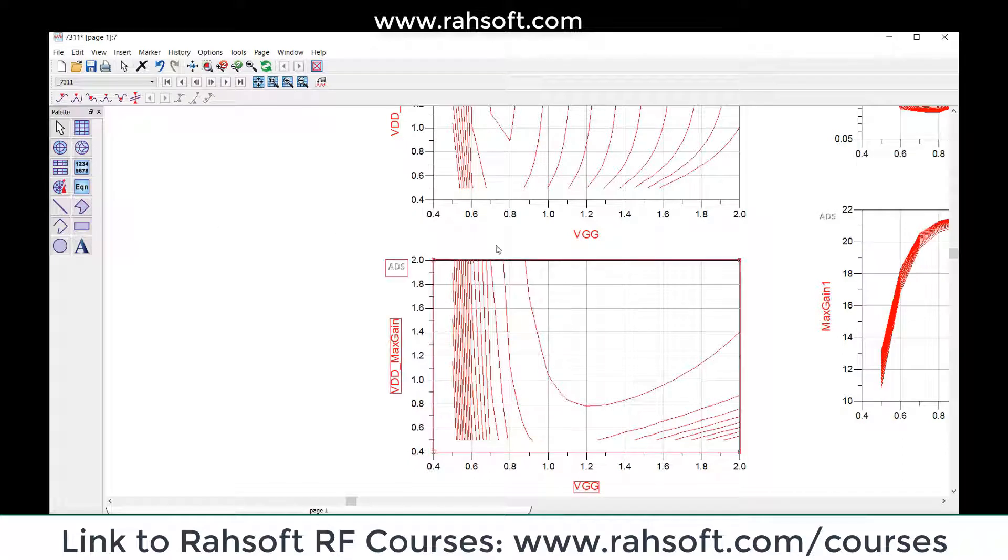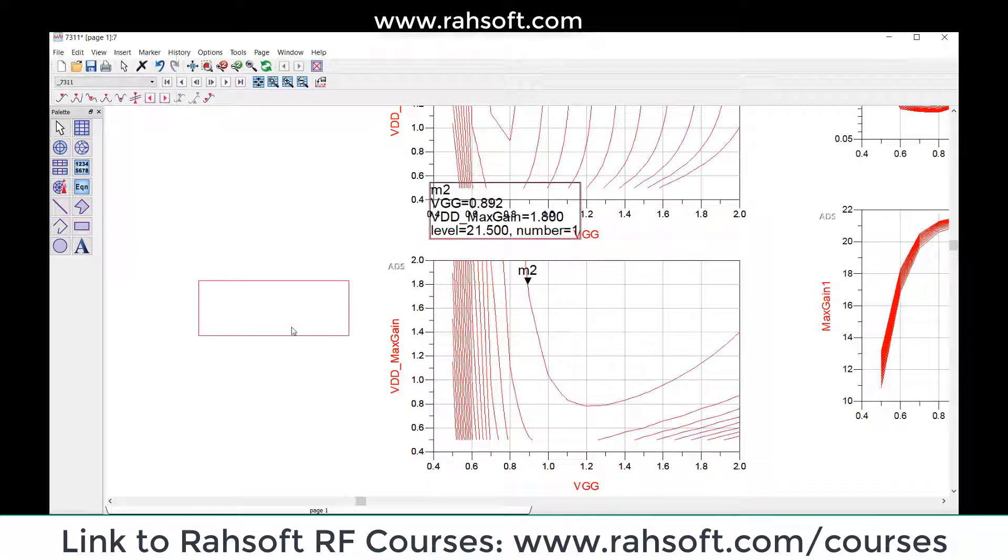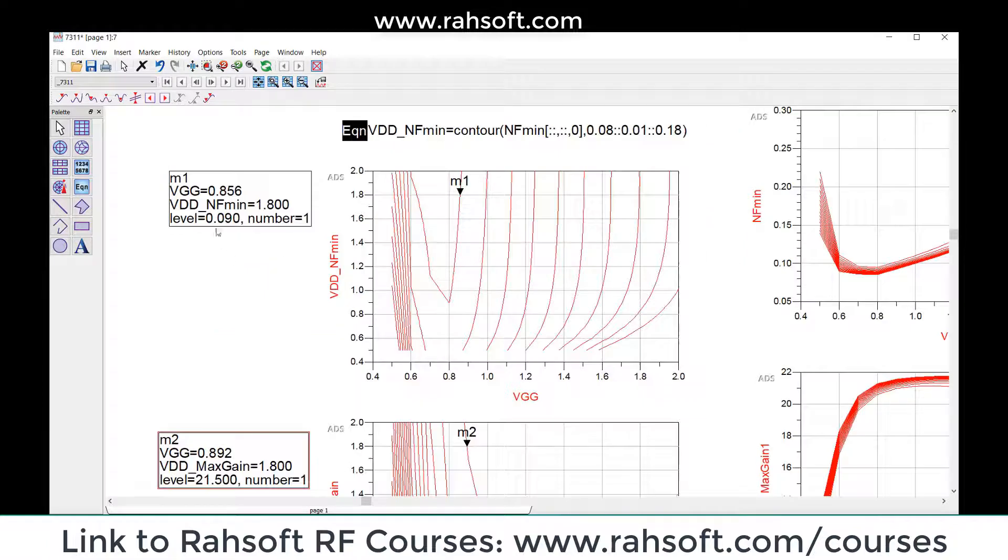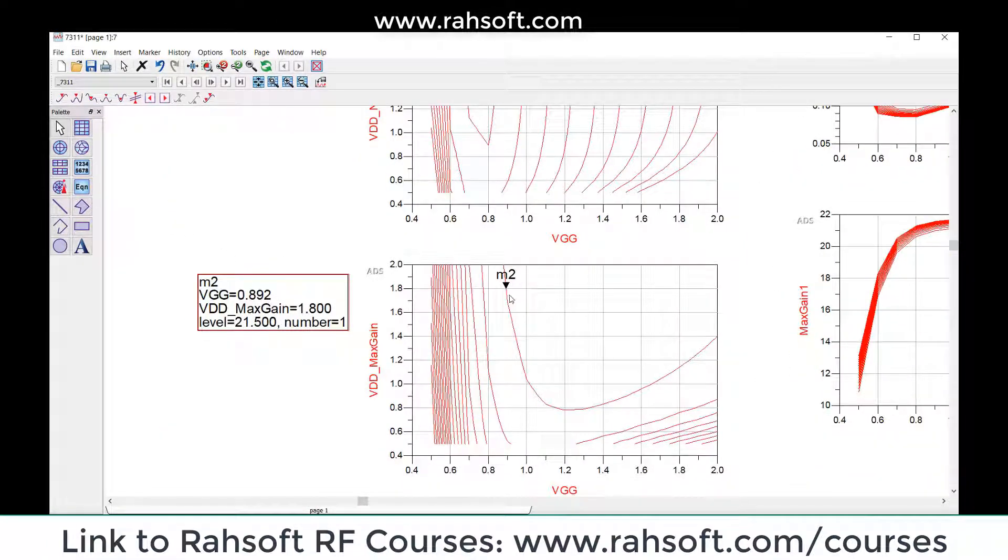I can use a marker again. It shows that my max gain at this level - this level shows your max gain. Same here, the level shows your max gain is 21.5.